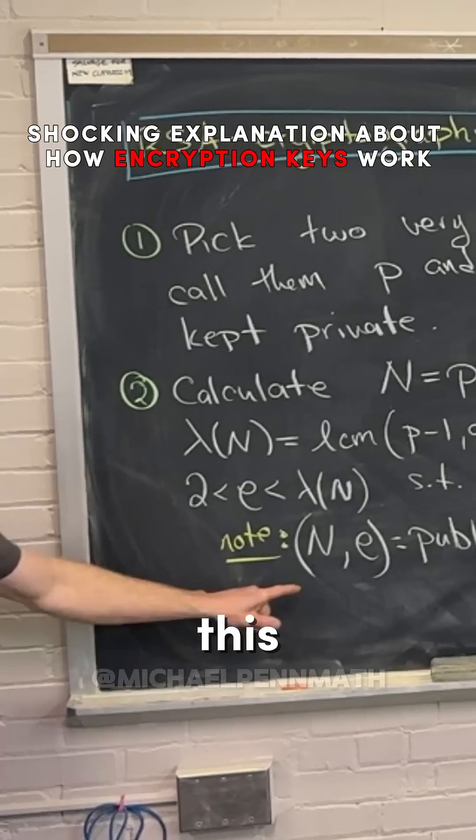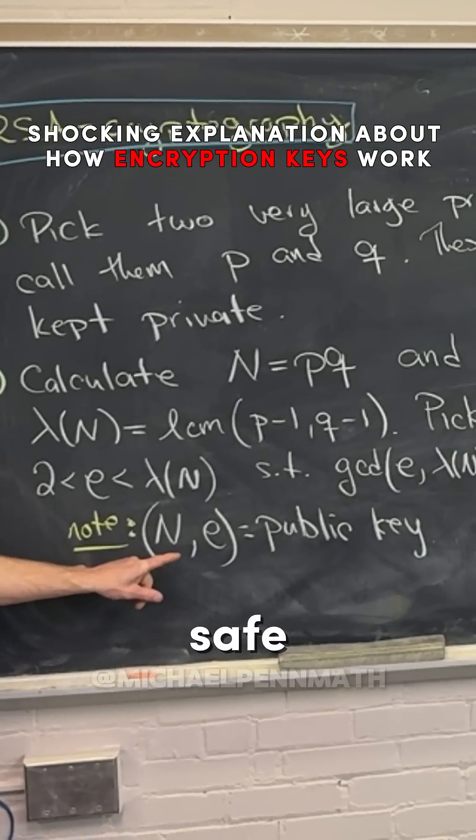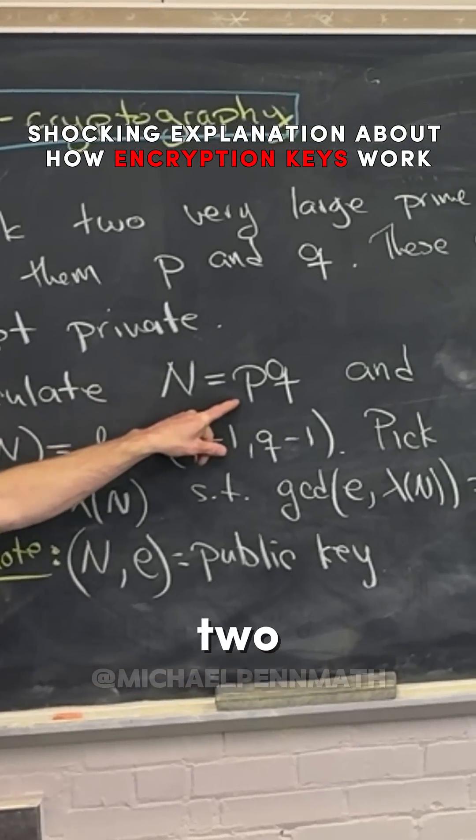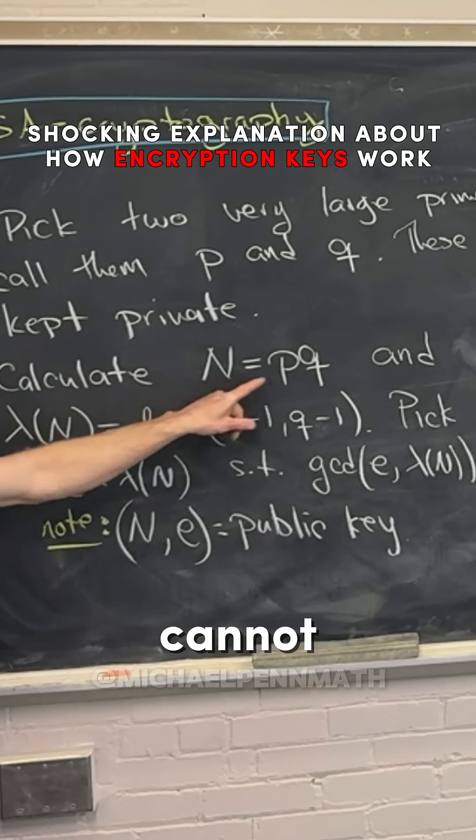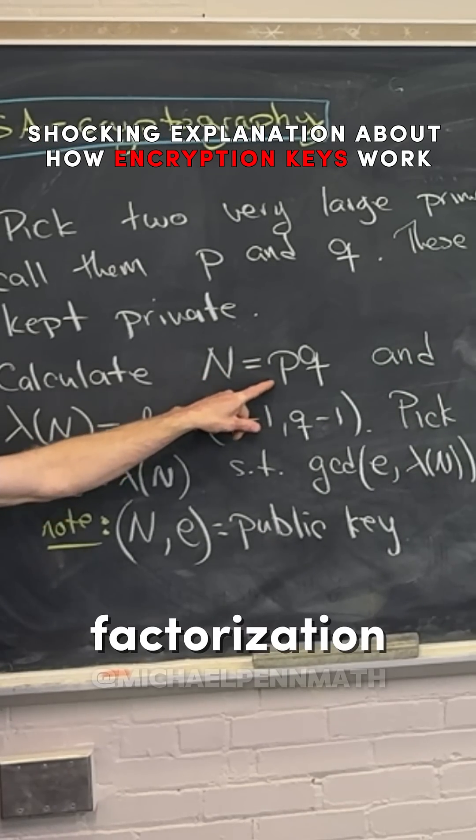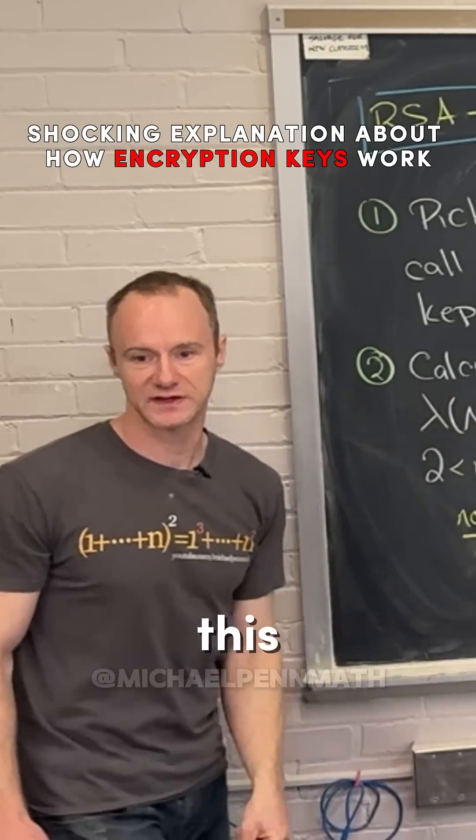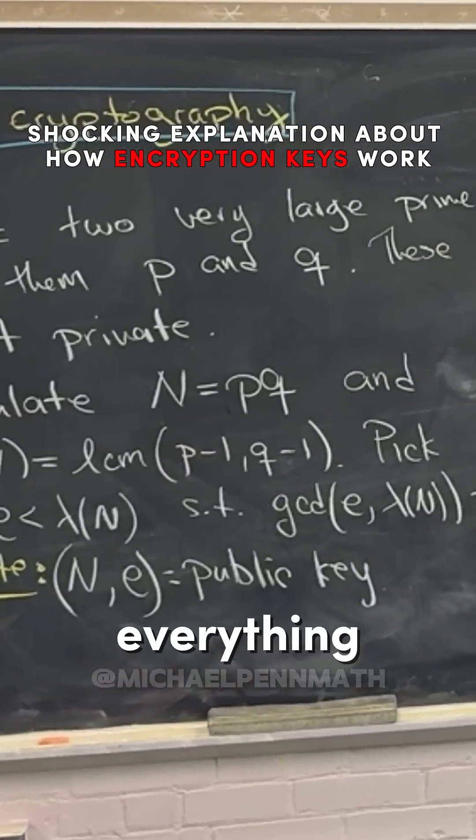And just to reiterate, this number N is safe because it's the product of these two very large primes and computers are bad at factoring. So a computer cannot perform this factorization and its inability to perform this factorization is what makes everything secure.